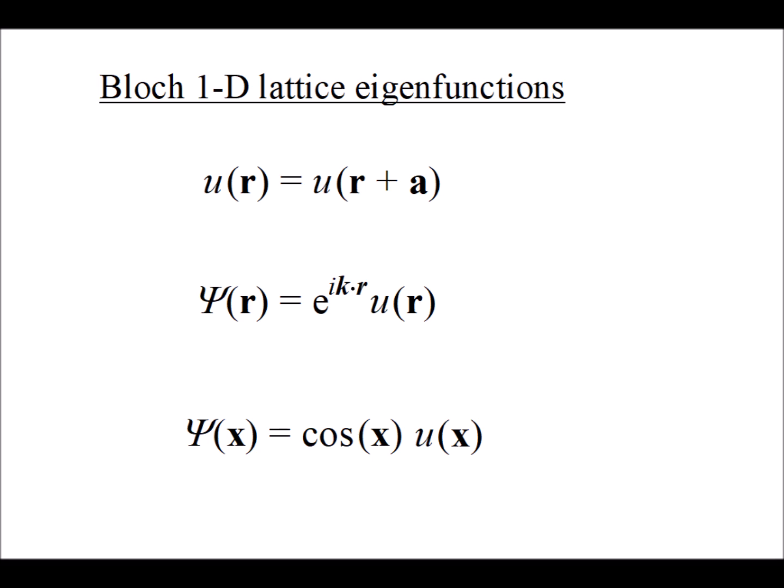Suppose that our lattice has a periodic potential u of r, and it's periodic with period a. So that means that u of r is equal to u of r plus a. According to Bloch's theorem, the eigenfunctions for such a system will consist of the set of e to the ikr times u of r.